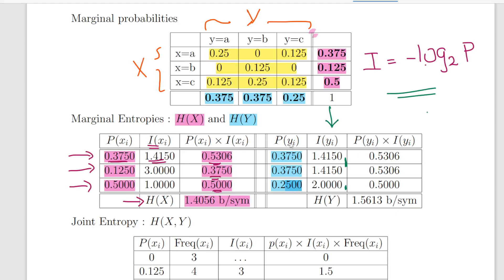When I multiply out the probabilities P times I, I get 0.5306, 0.5306 and 0.50. So putting those together, adding them up, that gives me the entropy of Y, the marginal entropy of Y. H(Y) equals 1.5613 bits per symbol.